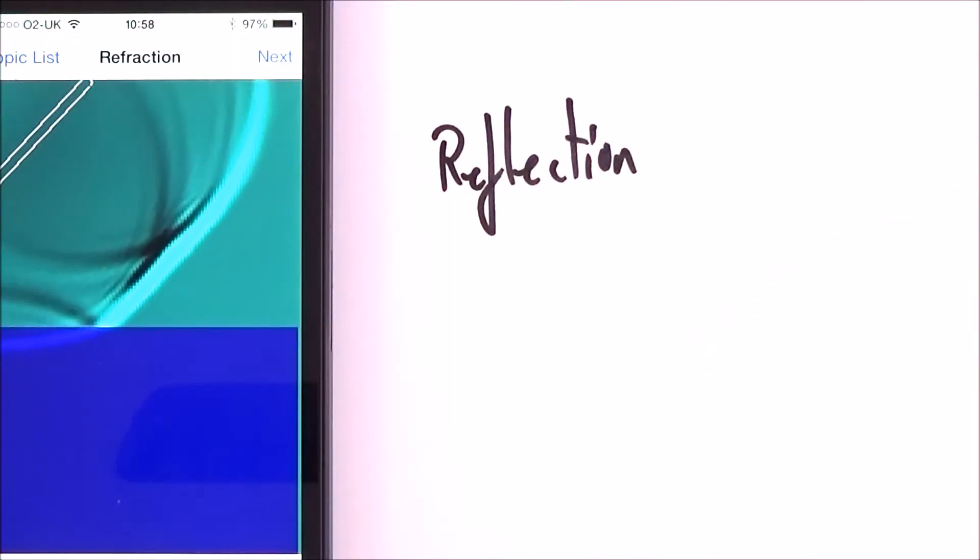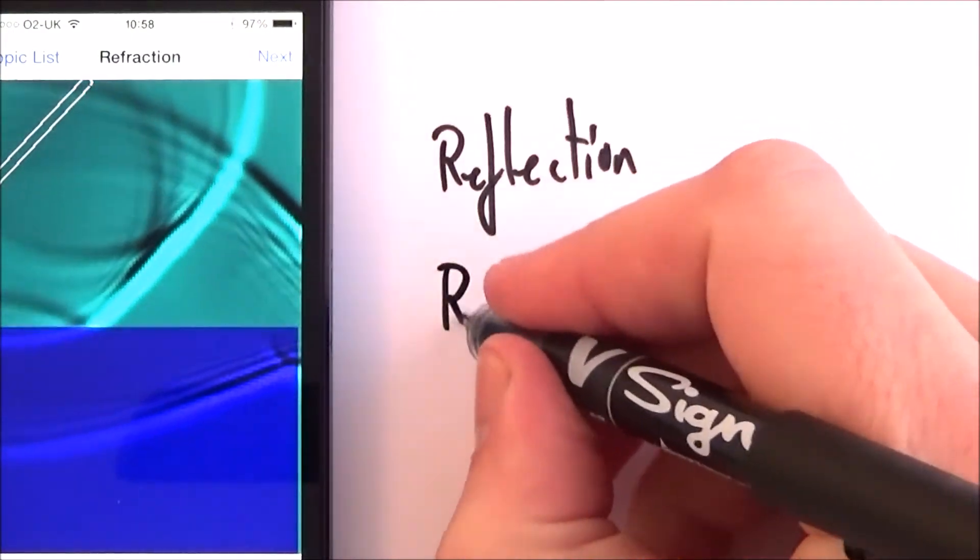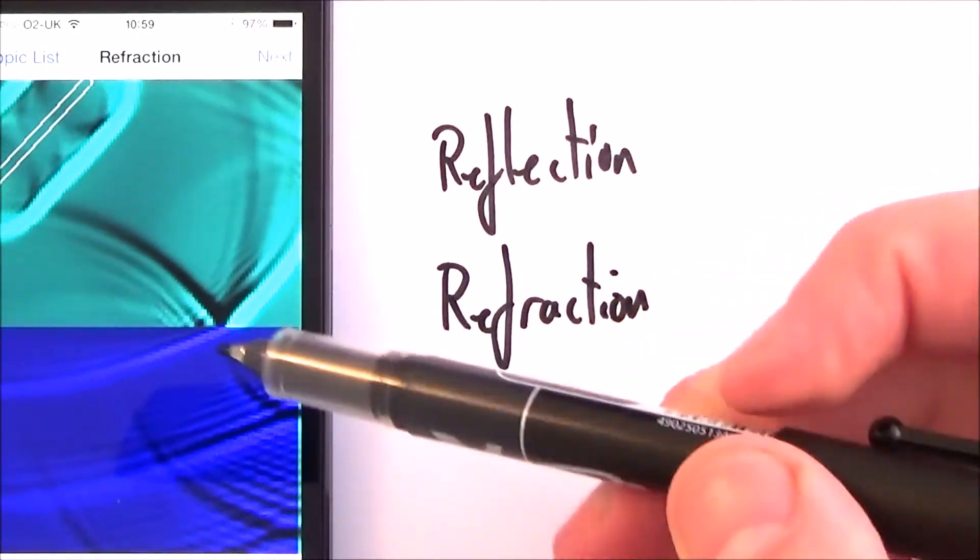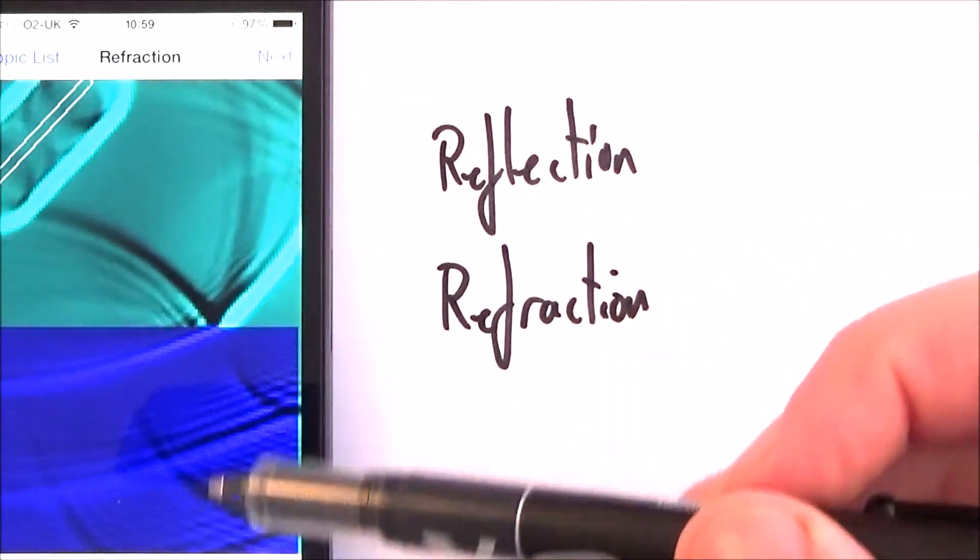We also have refraction. So refraction is where a wave changes direction as it moves from one medium into another which is a different kind of density.